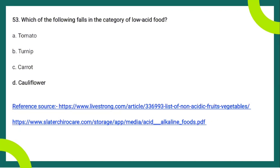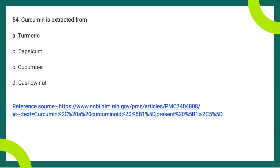The next question asks which of the following falls in the category of low acid food: tomato, turnip, carrot, or cauliflower. The right answer is cauliflower. Turnip, carrot, and cauliflower are all low acid foods, but cauliflower has a pH of about 5.6, while turnip and carrot have pH values below 5.6. The reference source categorizes vegetables into most alkaline, moderately alkaline, and slightly alkaline.